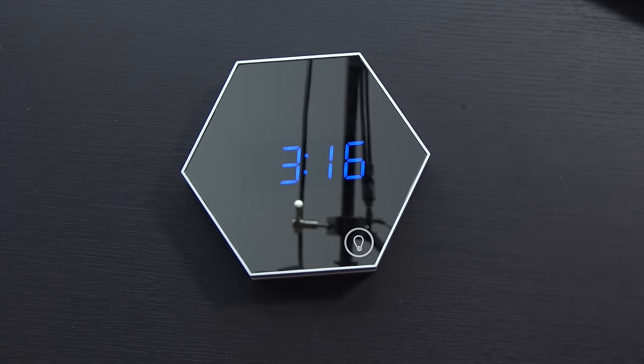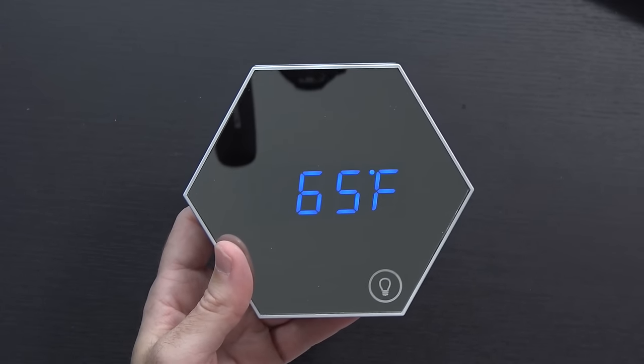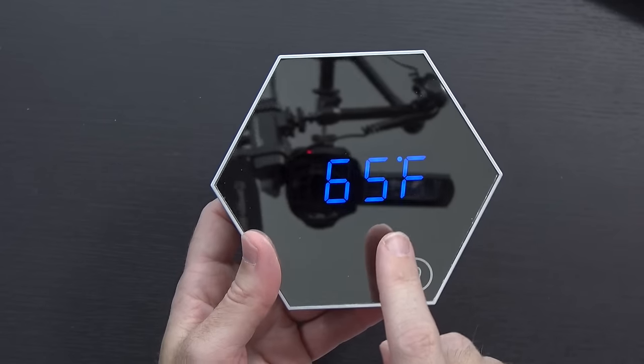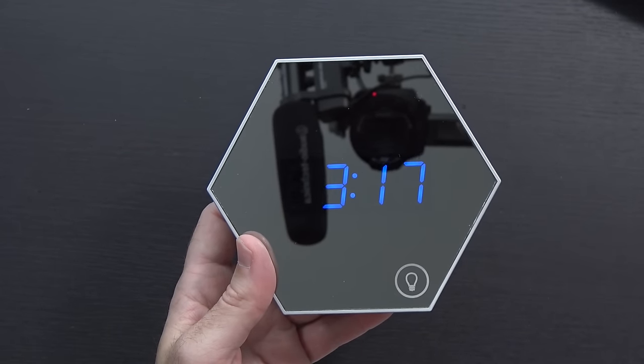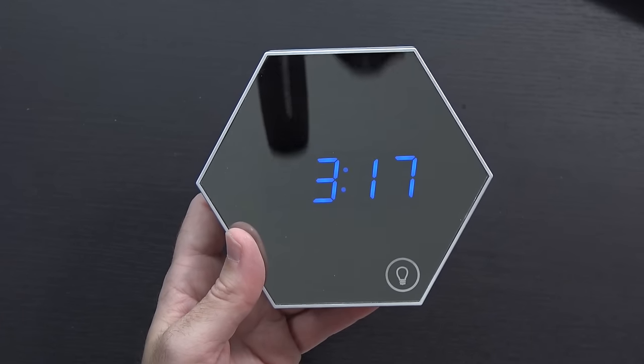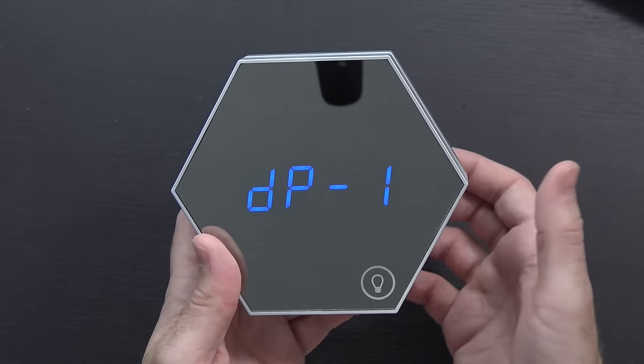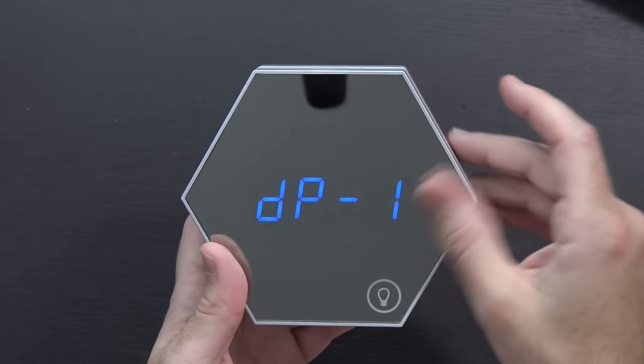You can change it between Celsius and Fahrenheit. Looking through some of the manual here, there's different display modes. So you can see right here it is switching between the time, the date, and the temperature. It's probably how I would like to leave it. But if you switch it over to DP1 mode, which you do by hitting that button there, it should just stay on time all the time.